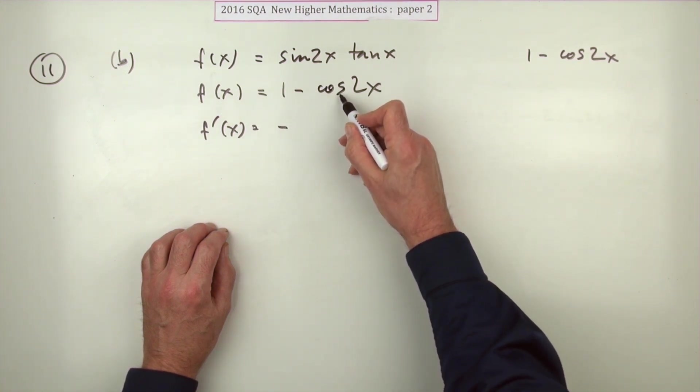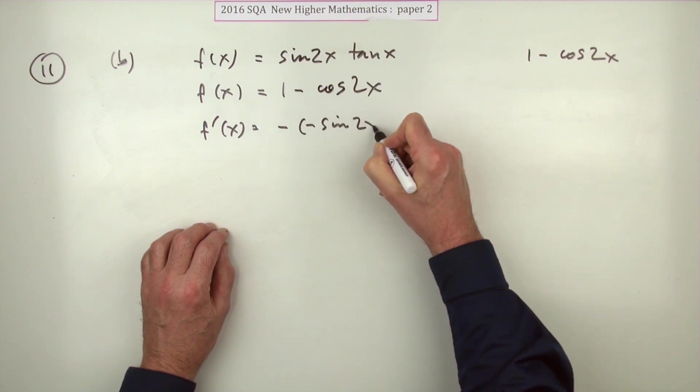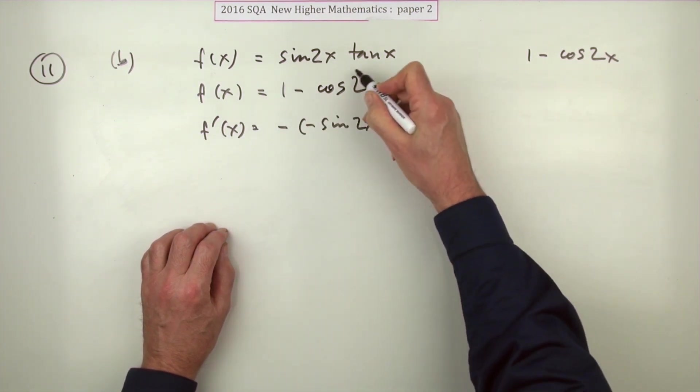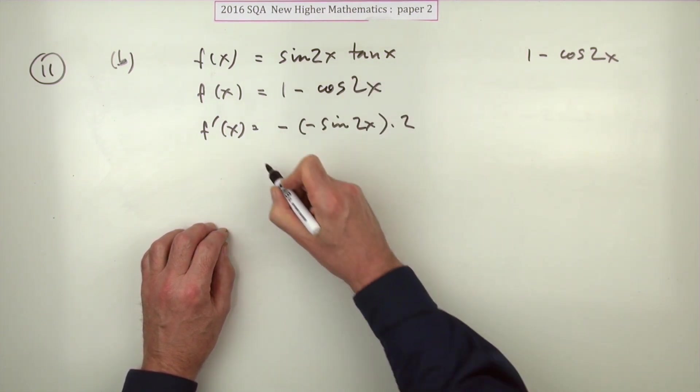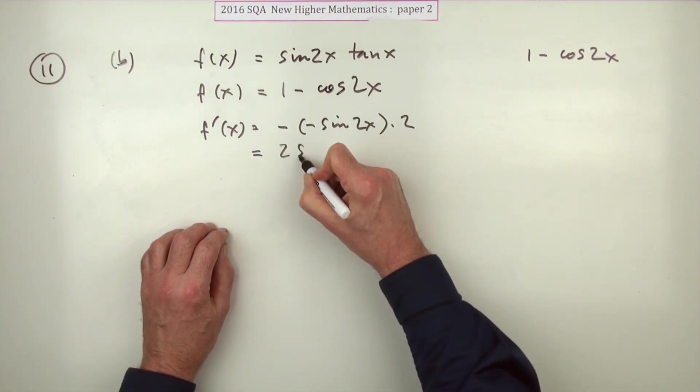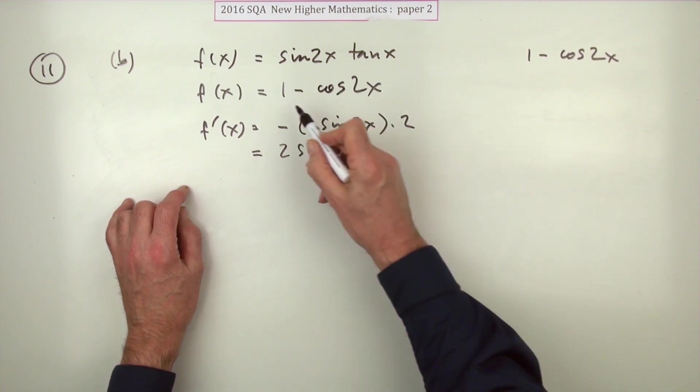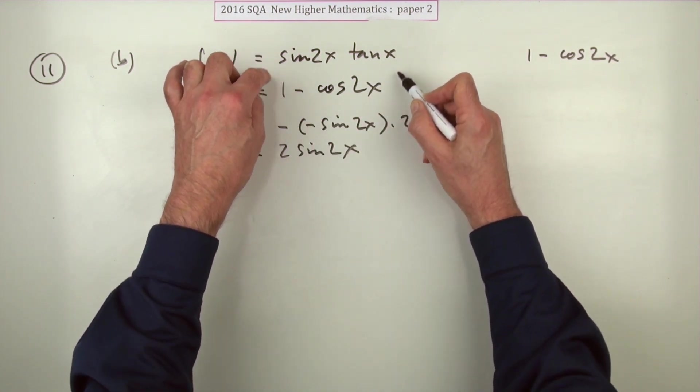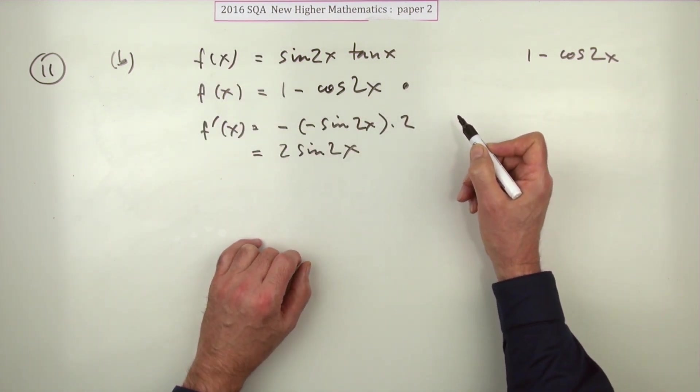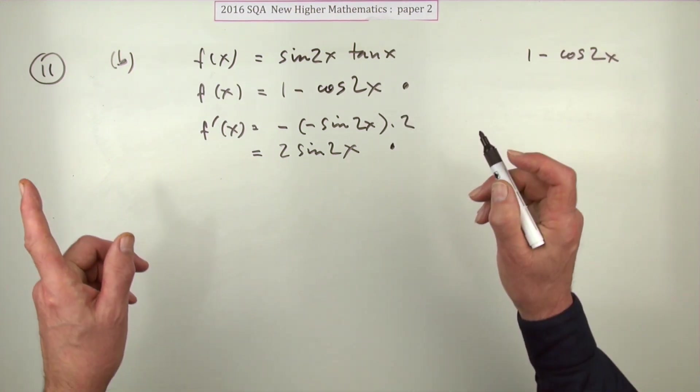So the constant term will disappear. Negative of—now cos goes to negative sine, so I'll just put that in—negative sine of 2x, multiplied by the inner derivative, which is a 2. So there you go, that's positive 2, so it's 2sin(2x). And the marks were: one mark just for spotting you could differentiate this instead because it's identical, and then differentiating it.